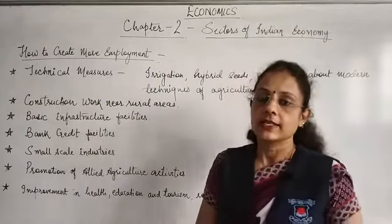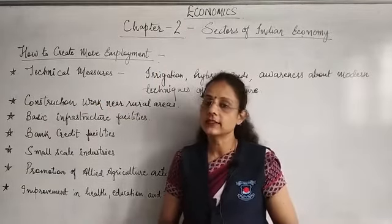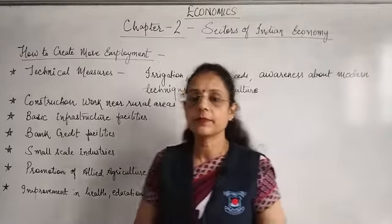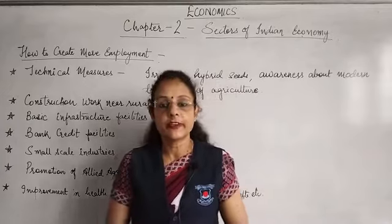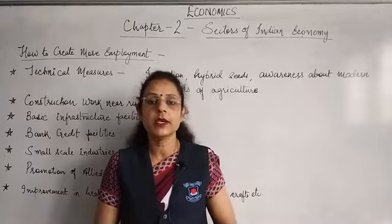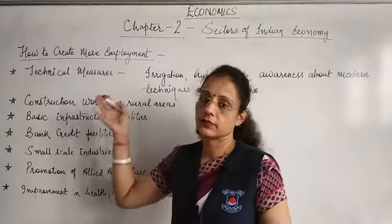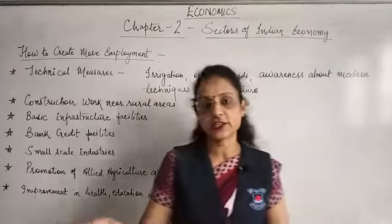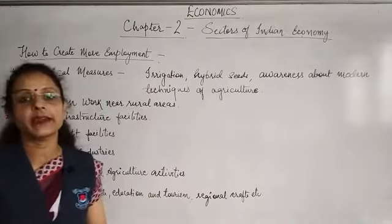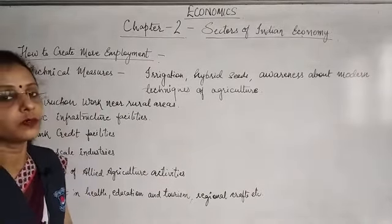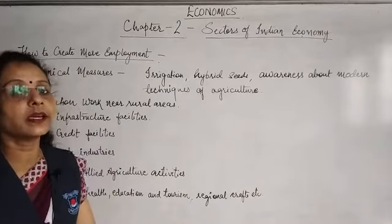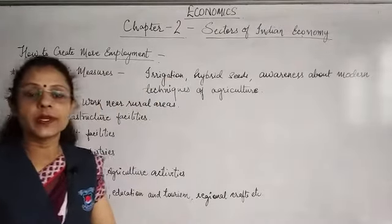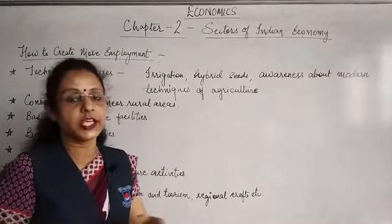First, we are discussing the agricultural sector and how to create more employment there. Some technical measures can be taken: irrigation facilities can be improved, hybrid seeds can be provided to farmers, and they can be taught about modern farming techniques. For example, take Lakshmi, who has 2 hectares of unirrigated land. Because her land is unirrigated, her production is not as high as it could be on irrigated land. If we provide irrigation facilities to Lakshmi, she will be able to grow more crops.